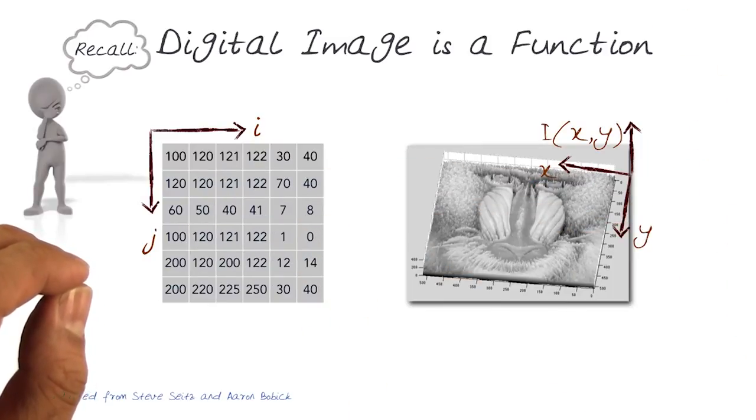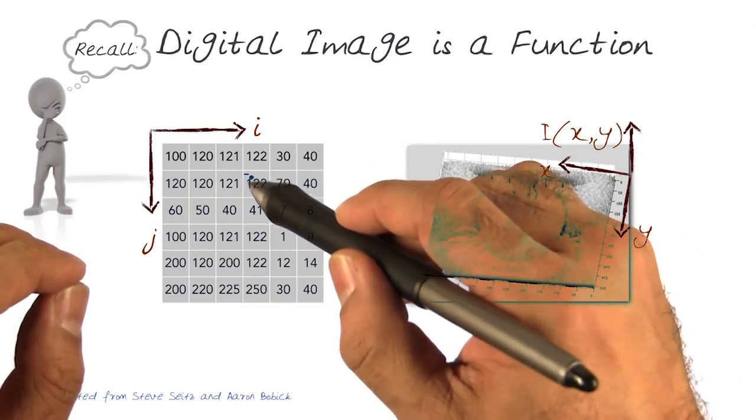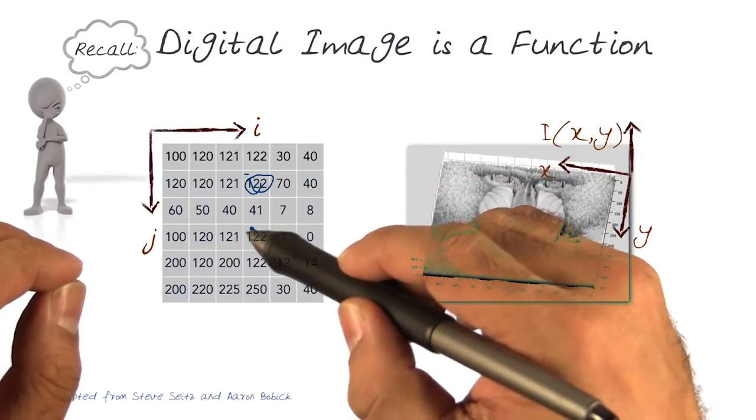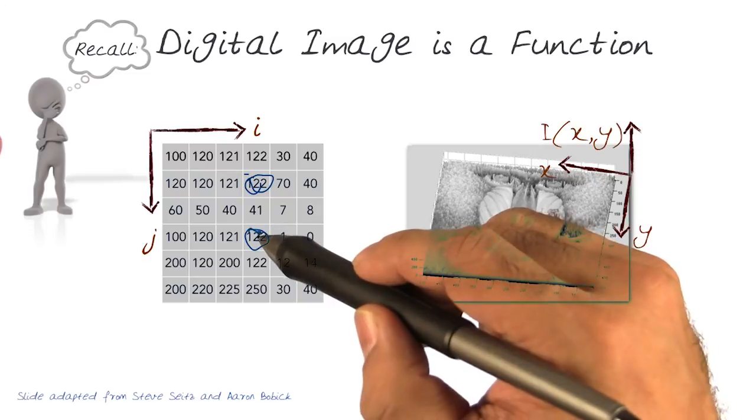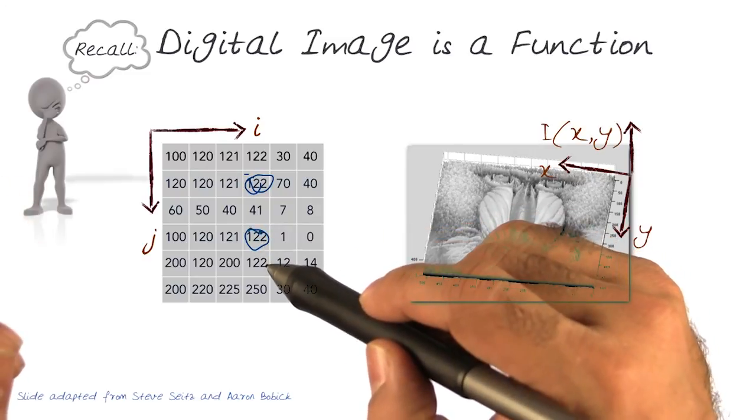This allows us to get any value we're interested in, extract content, look at intensities at specific values, and do some processing with it.